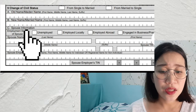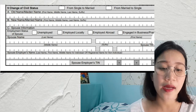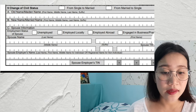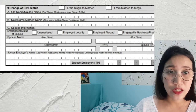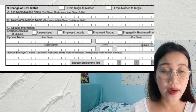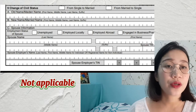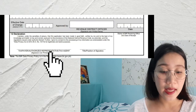Meron din po nakalagay dito yung spouse information — if employed or unemployed yung ating asawa. Fill out nyo lang yung details; yung mga information na hindi naman required, lagyan nyo lang ng NA or not applicable. And then after we fill out those information, don't forget our signature or yung name natin. As simple as that — yun lang ang dapat nating i-fill out.